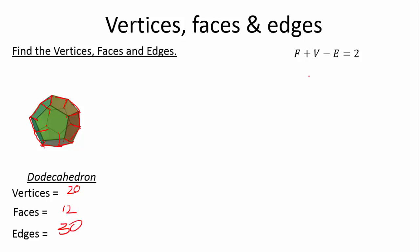Let's test Euler's Formula. Faces plus vertices minus edges: twelve plus twenty is thirty-two, minus thirty equals two. It works!